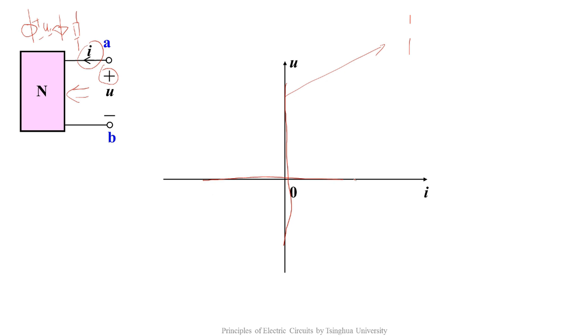What about this? The voltage is always zero, and the current can be any value. So it's a short circuit, or a voltage source with zero value, or a resistor with zero value.